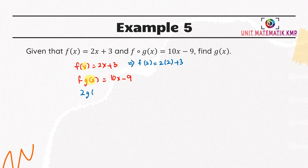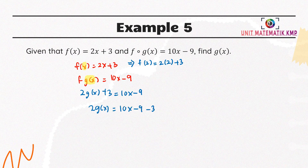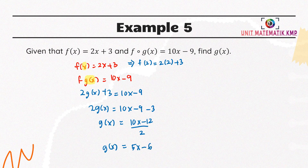Substituting g(x) into f, we get 2·g(x) plus 3 equals 10x minus 9. Simplifying to make g(x) the subject: 2·g(x) equals 10x minus 9 minus 3, giving g(x) equals (10x minus 12) over 2. Both terms can be divided by 2, giving g(x) equals 5x minus 6.